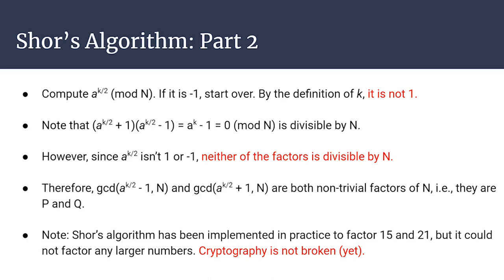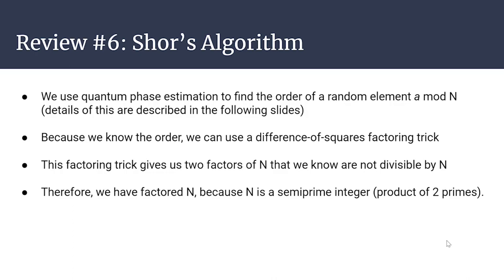In practice, Shor's algorithm has been implemented and was able to factor 15 and 21, but not 35. The key of Shor's algorithm is quantum phase estimation, which lets us find the order of a mod n quickly. Knowing this order allows us to use difference-of-squares factoring to find two non-trivial factors of n. We've found p and q whose product is n, breaking RSA. The last section covers how quantum period finding is the same thing as quantum phase estimation.